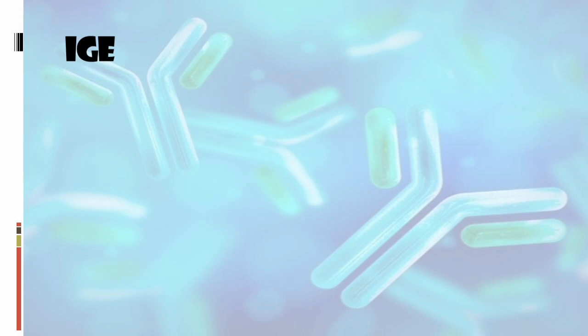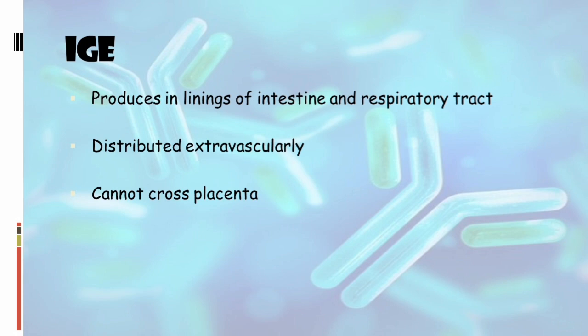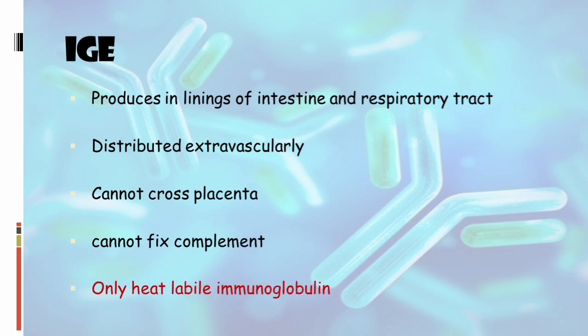Whenever IgE comes to mind, the first thing is the allergic response. When a patient presents with food allergy, skin allergy, or dust allergy, we check the absolute eosinophil count and rule out allergic response using serum IgE levels. IgE is produced in the linings of the intestine and respiratory tract. It is distributed extravascularly, cannot cross the placenta, cannot fix complement, and it is the only heat-labile immunoglobulin — it is very sensitive to heat and will break down under heat.